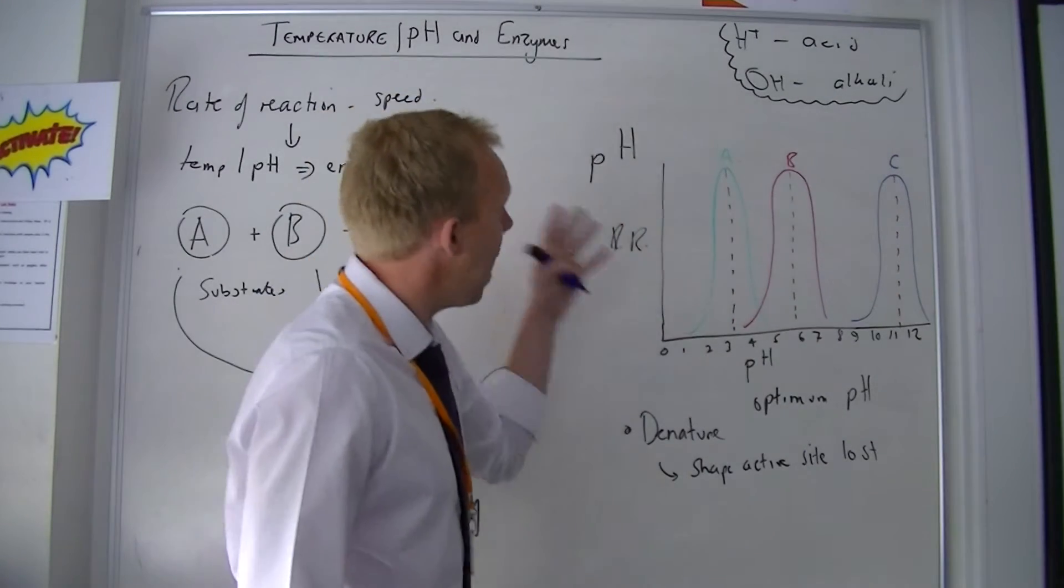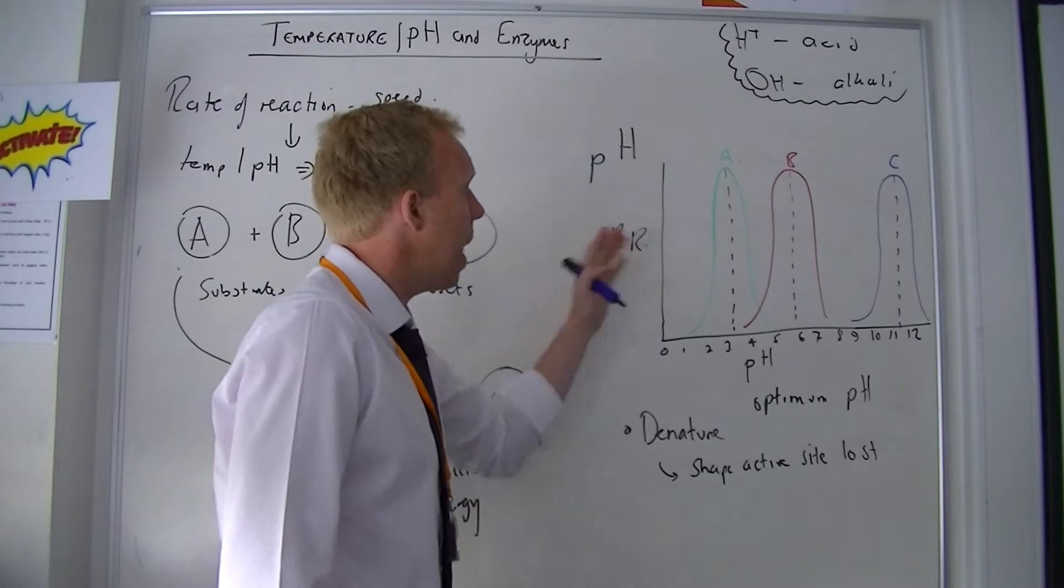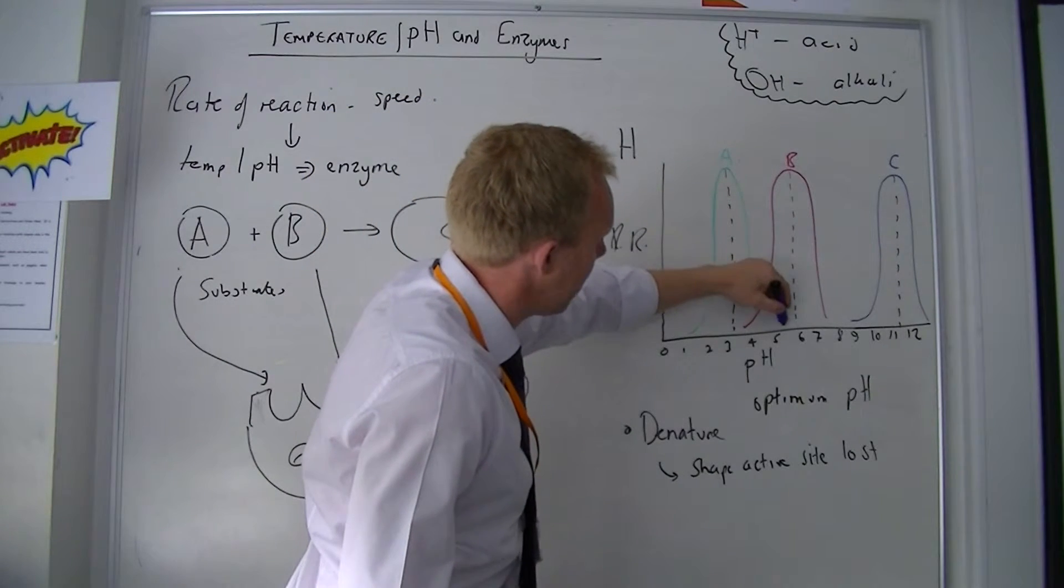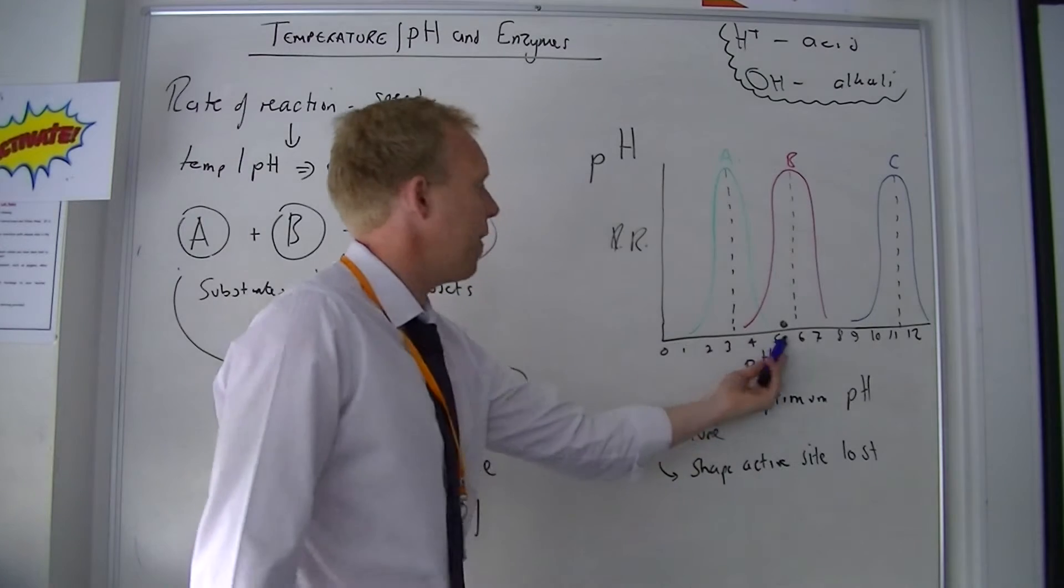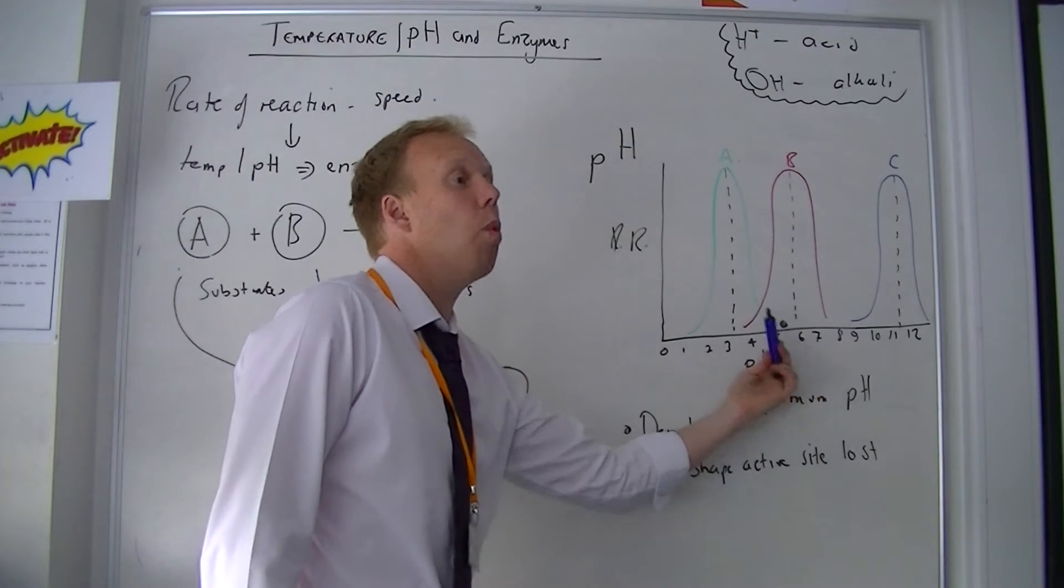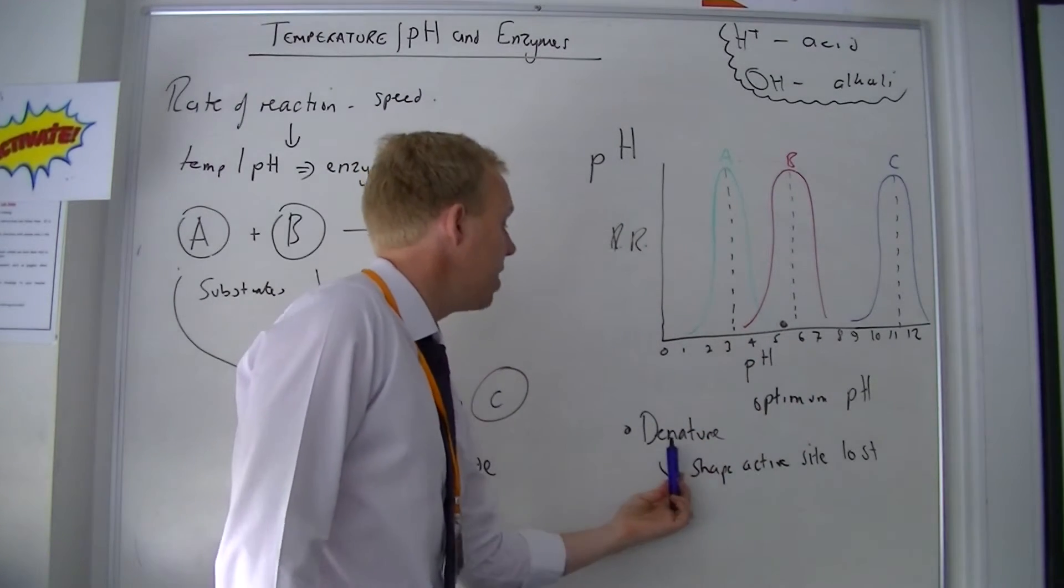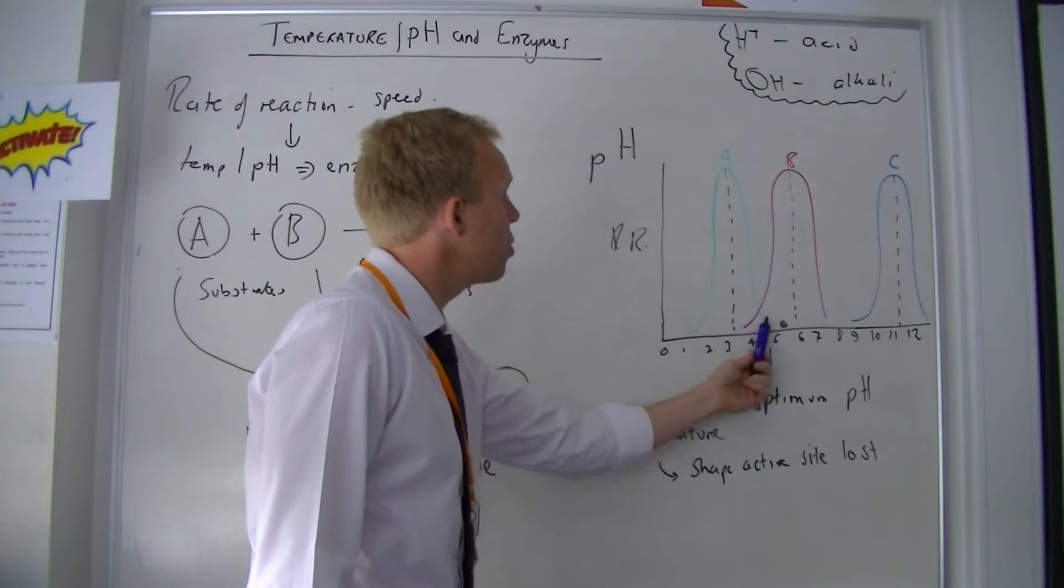So, if you are enzyme A and you are put, let's say, in a beaker of pH 5, you will not work because you will have denatured. Therefore, there's no rate of reaction.